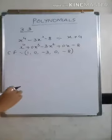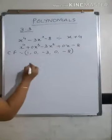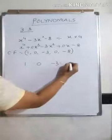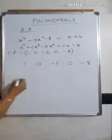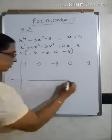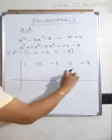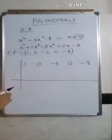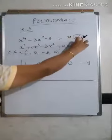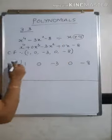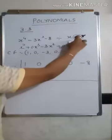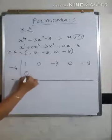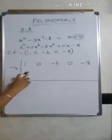After writing it in coefficient form, write the coefficients one beside the other leaving a small gap: 1, 0, -3, 0, -8. Put a vertical line, then draw a horizontal line leaving a small gap. This is the divisor. The divisor's constant has to be taken with the opposite sign — here you have plus 4, so you do the division by minus 4. For all problems, the first term below the line starts as 0.